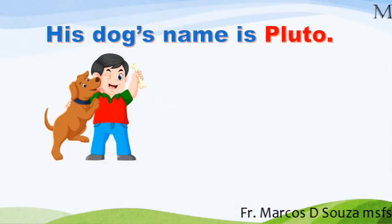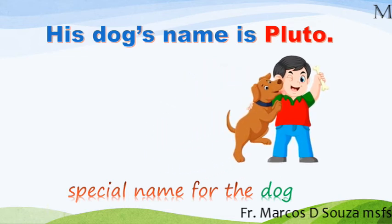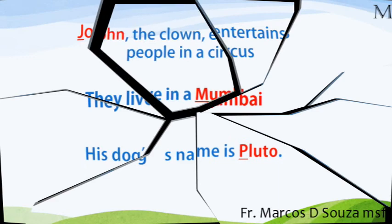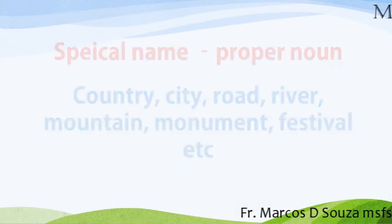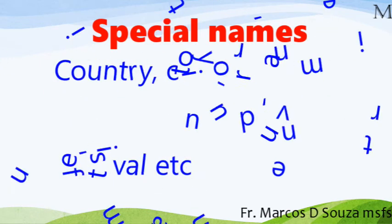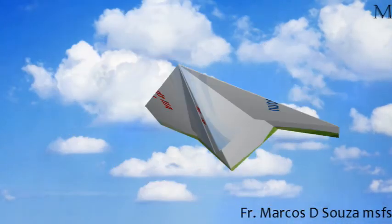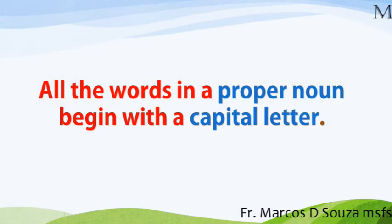His dog's name is Pluto. In this sentence, we are talking about Pluto the dog. Pluto is a special name for the dog. All proper nouns begin with a capital letter. The special name given to a country, city, road, river, mountain, monument, festival, etc. is a proper noun. All the words in a proper noun begin with a capital letter.